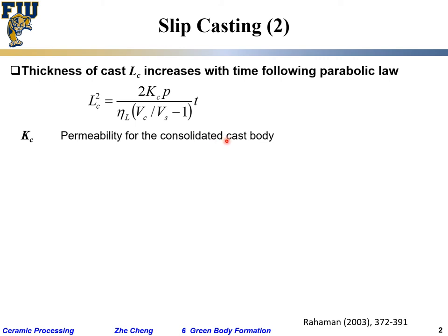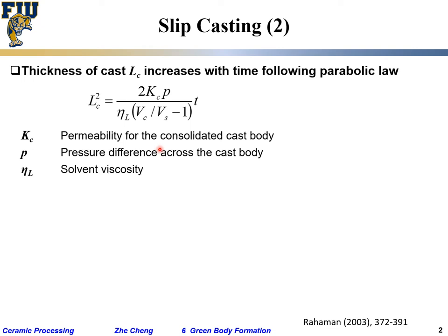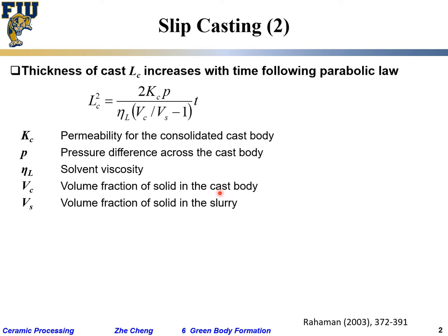Other parameters in the constant include delta p — the pressure difference across the cast body, between the still-liquid interior and outside — the viscosity, the volume fraction of solid in the cast body vc, and the volume fraction of solid in the slurry. This ratio gives you an idea of roughly how fast the cast thickness will increase over time.